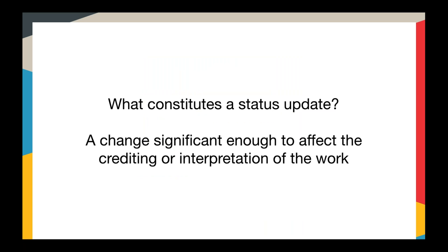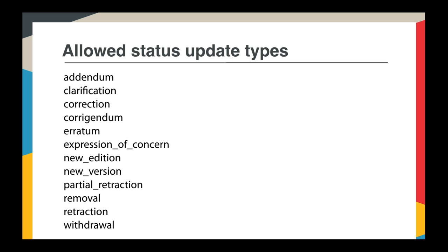We have put some definitions around what we mean by a status update within Crossmark. In order to trigger the Crossmark box to turn yellow or red and alert the reader, the changes to the content must be significant enough to affect the crediting or interpretation of the work. Within scholarly publishing there is a fairly limited set of events that meet this criteria. We've defined a list working with our publisher members, and these are the 12 status update types you can use to trigger an alert to the reader.